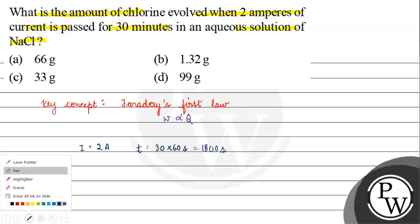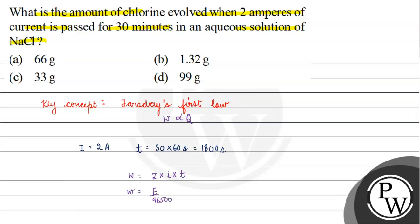So how will we find it? We will use W equals Z into IT. Z is basically E by 96500 into I into T, where W is the weight.